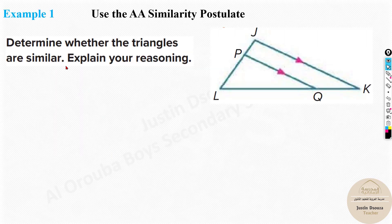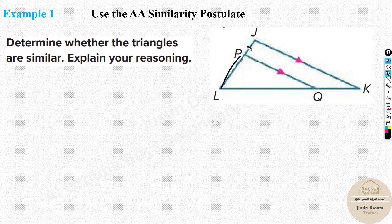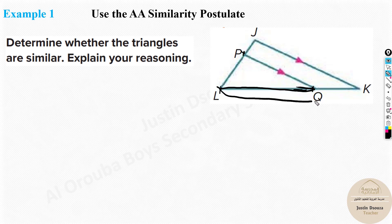Let's see the first problem: determine whether the triangles are similar and explain your reasoning. We have two triangles here. One is the inner triangle LPQ, and the other is the outer triangle LJK. The line PQ is inside, and the line JK is on the outer triangle.